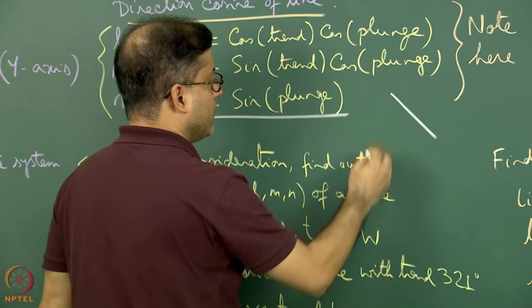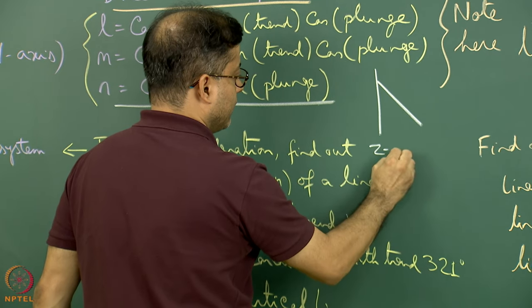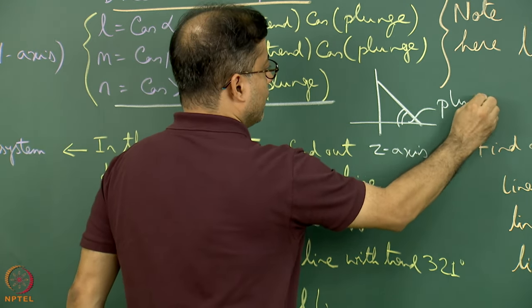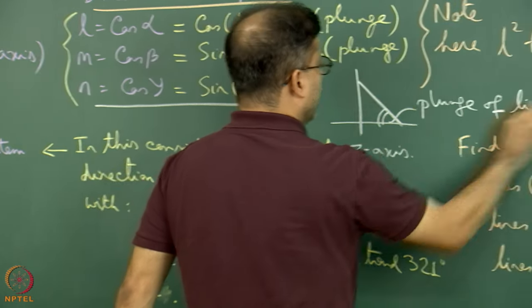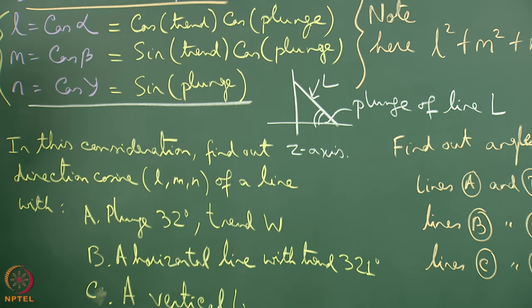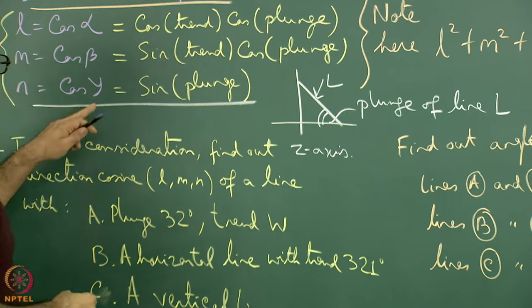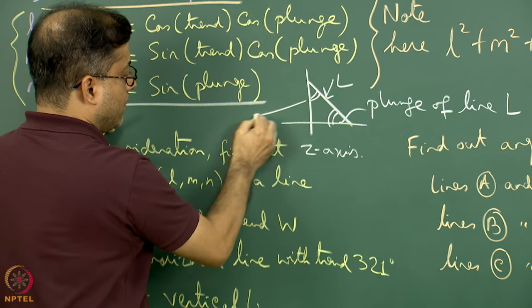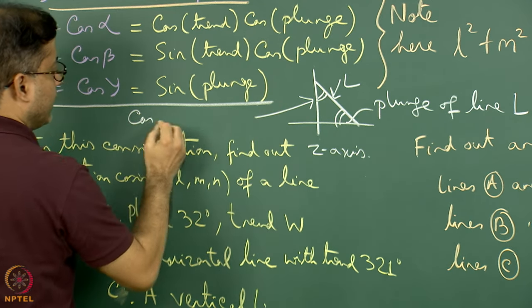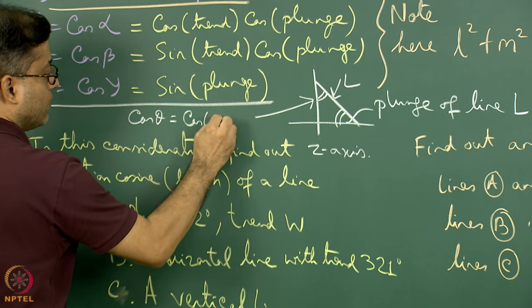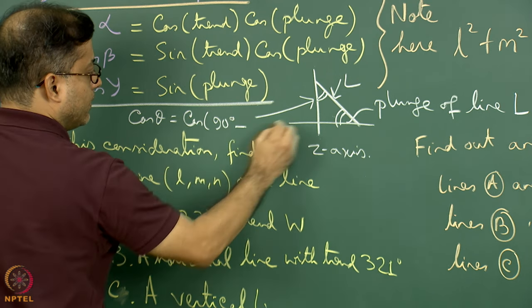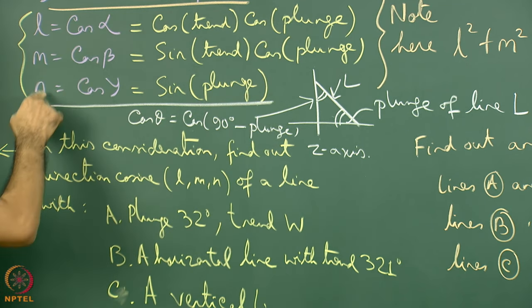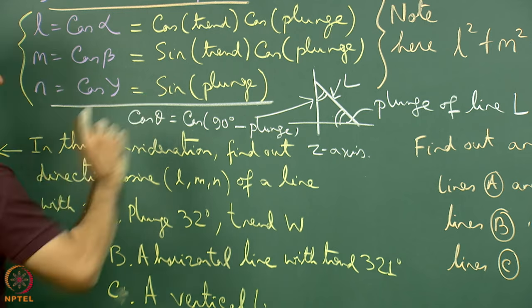Imagine this is the line in three dimensions. This is the z-axis, and I can draw a horizontal line over there. This angle is the plunge of line l. By definition that is the plunge. When I say gamma angle, I am interested in the angle between the vertical direction and l. So if I write cos of this angle theta, I can write this as cos(90° − plunge). Now cos(90° − plunge) equals sin(plunge), and in that way the relationship n = cos(gamma) = sin(plunge) can be established.